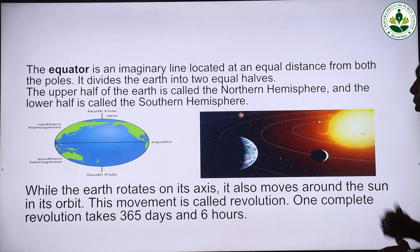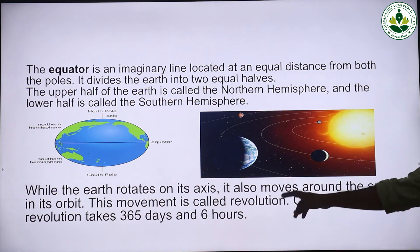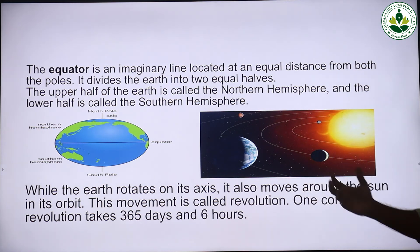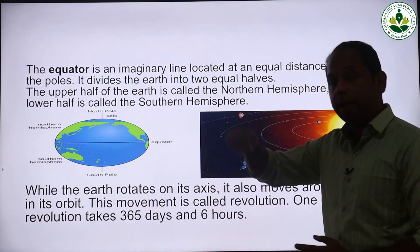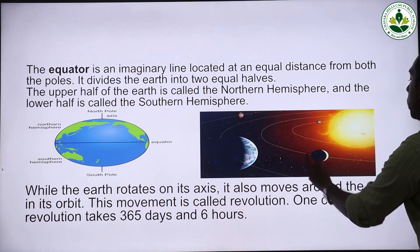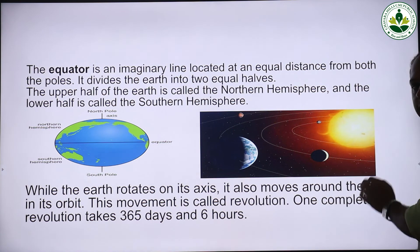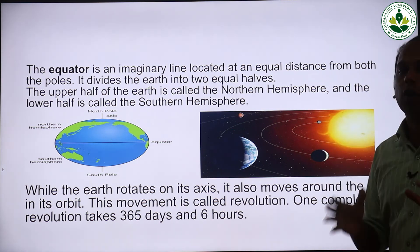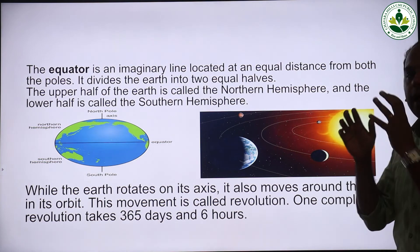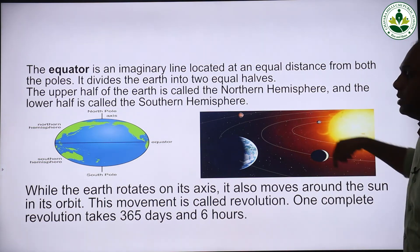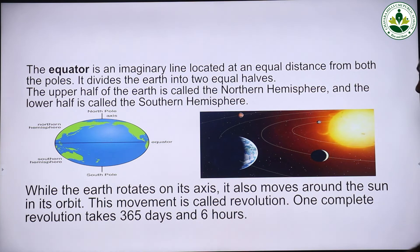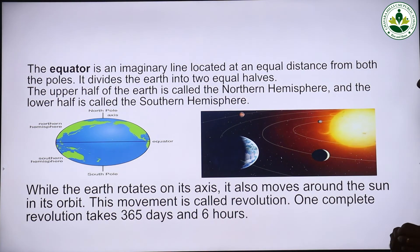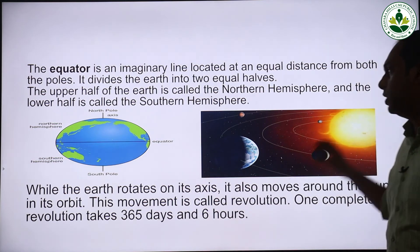While the earth rotates on its axis, it also moves around the sun on its orbit. This movement is called revolution. One complete revolution takes 365 days and six hours. So when the earth rotates in its own axis, that is called rotation, and when the earth moves around the sun, that is called revolution.